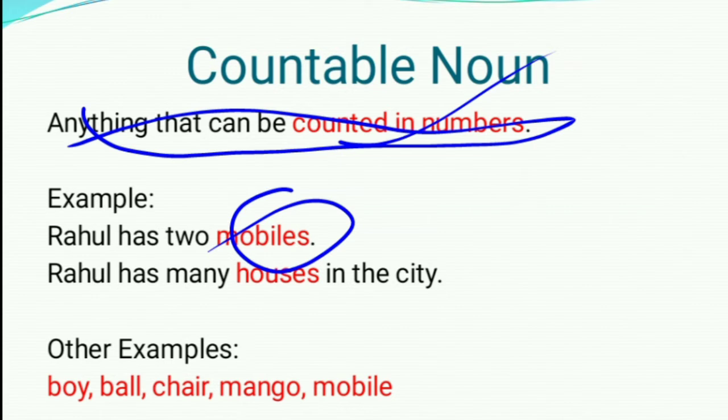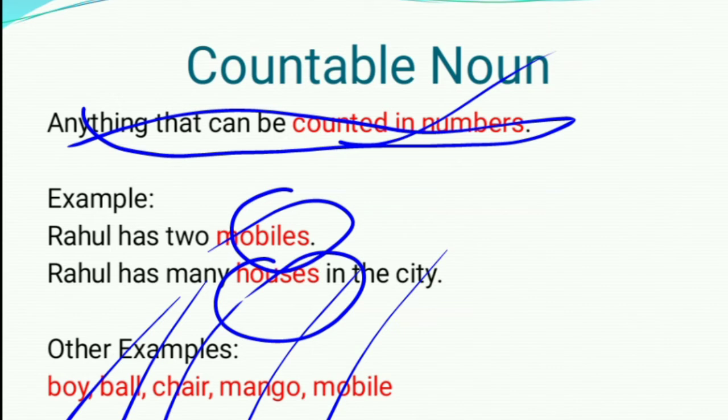Another sentence: Rahul has many houses in the city. Here, house is a noun. Other examples we can see: cow, dog, chair, mango, mobile — they all are examples of countable noun.